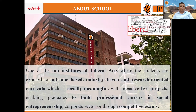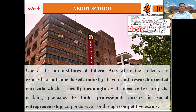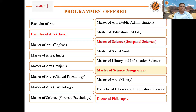We will firstly discuss about the school. We have the School of Liberal and Creative Arts, in which the department is Social Sciences and Languages. The Department of Geography has an outcome-based, industry-driven, and research-oriented curriculum designed to be meaningful, with live projects building personal careers and social entrepreneurship. The department also benefits students for competitive exams by designing the curriculum in that manner. The department offers a lot of multi-disciplinary courses in the stream of geography.